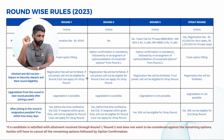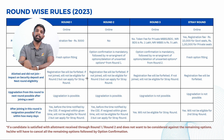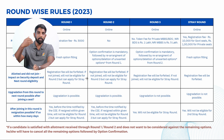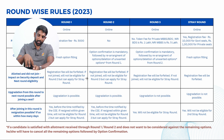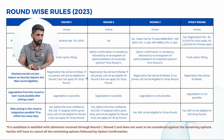If you are allotted a seat in the Stray Round and you don't join, the registration fee will be forfeited. Upgradation from the Stray Round to further Stray Rounds is not possible. If you join a seat in the Stray Round, you will be able to resign the seat, but you will become ineligible for further Stray Rounds or subsequent rounds.